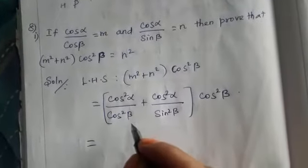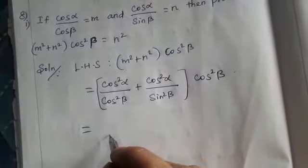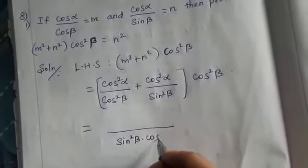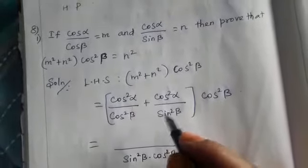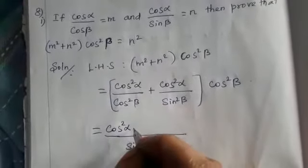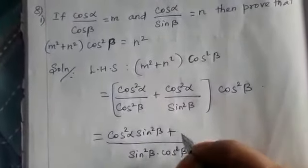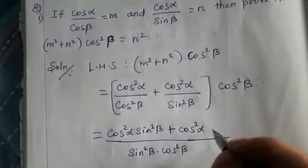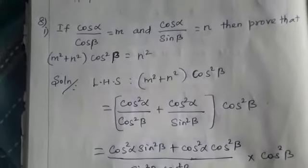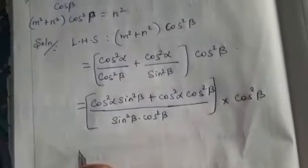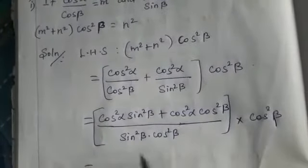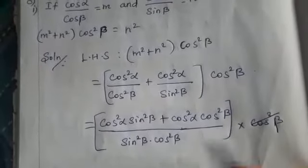Inside the bracket we have fractions to add, so we take the LCM. The LCM of the denominators is sin²β · cos²β. The numerator becomes the cross multiplication: cos²α · sin²β + cos²α · cos²β, all over sin²β · cos²β. We then multiply by cos²β, so we can cancel the cos²β.